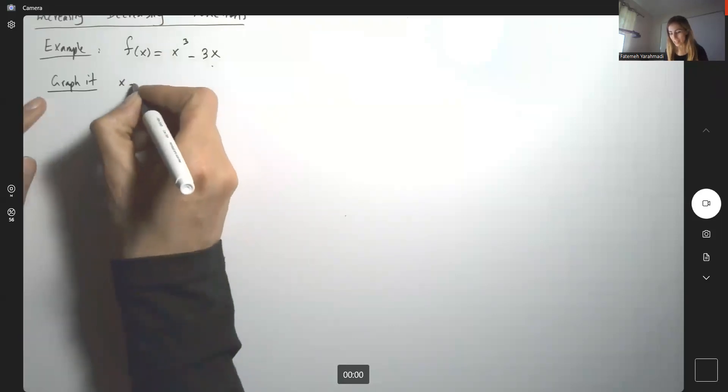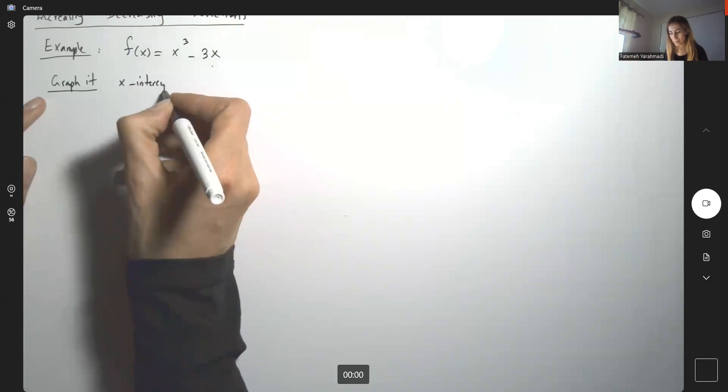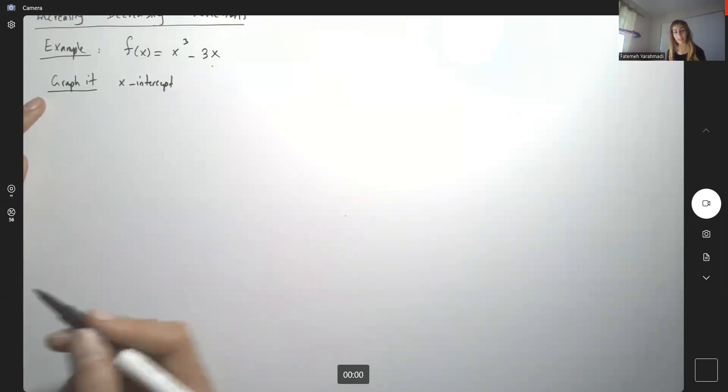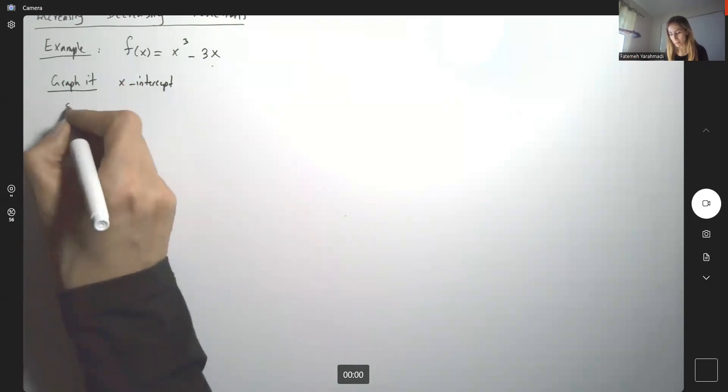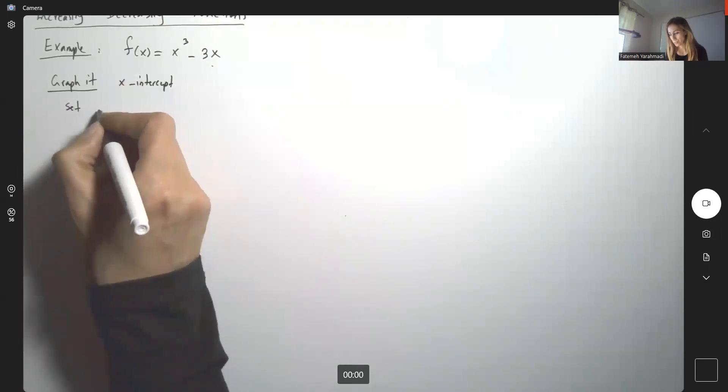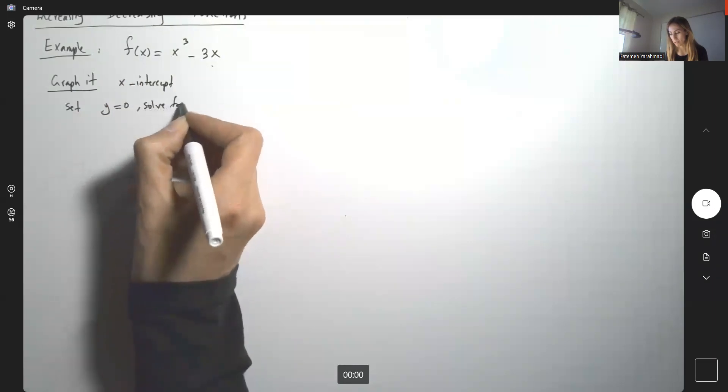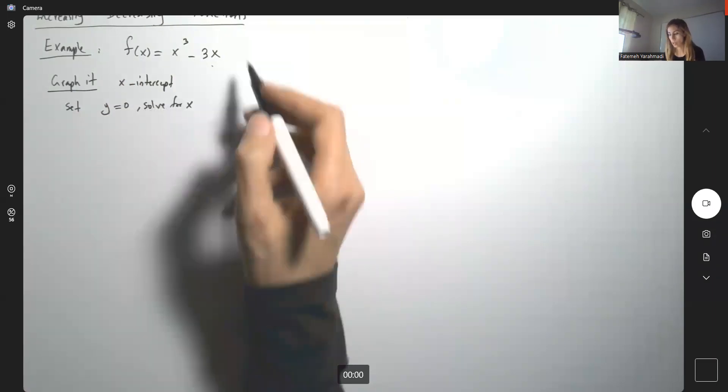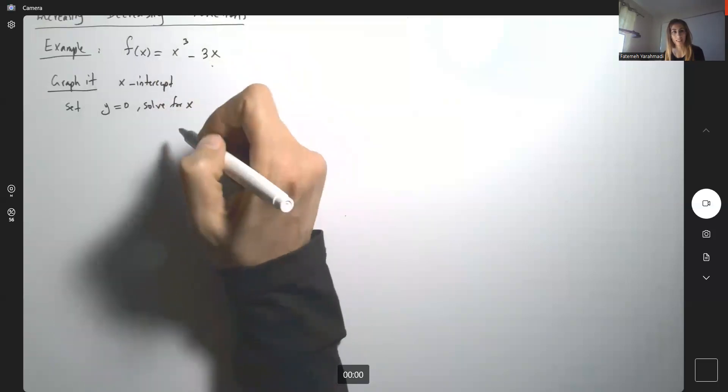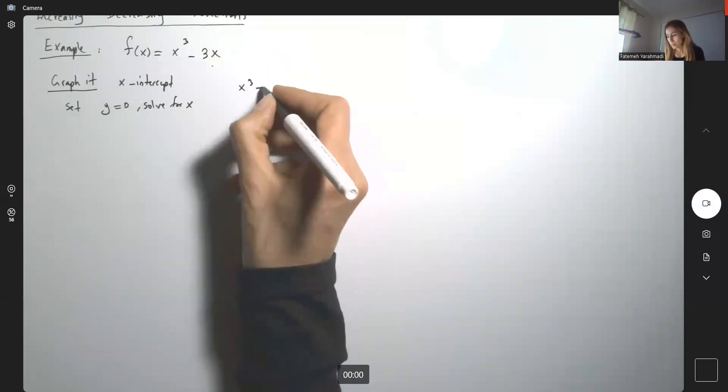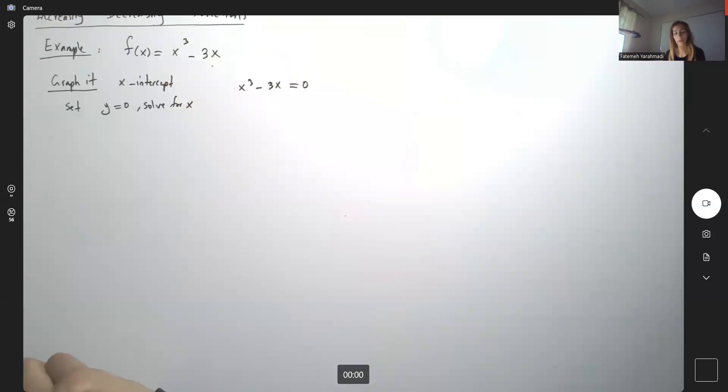Try to analyze it using x-intercepts, then find the y-intercept and plug in more points. To find x-intercepts, set y equal to 0 and solve for x. So y or f(x) are the same thing: x³ - 3x = 0.